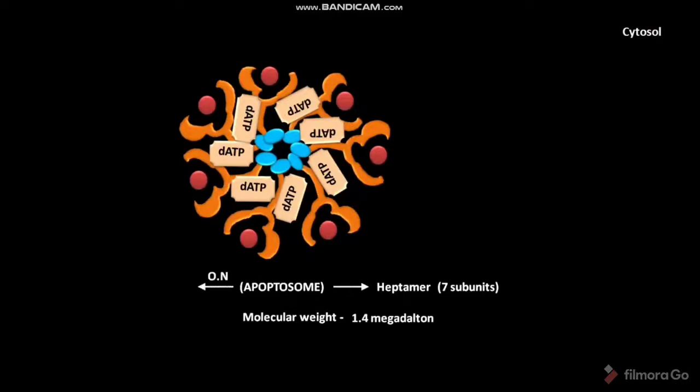The other name of apoptosome is wheel of death. The CARD domains of APAF1 are exposed in the central hub of wheel of death. The shape of apoptosome is like a disc.